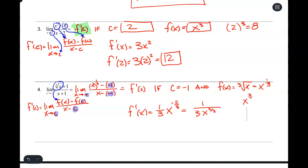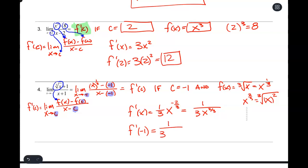Let me rewrite that — I don't like negative exponents. So f prime of x equals 1 over (3 times x^(2/3)). Remember, x to the 2/3 means we square x then take the cube root. Now f prime of negative 1: we get 1 divided by [3 times (negative 1)^(2/3)]. Squaring negative 1 gives positive 1, taking the cube root of 1 gives 1. So this equals 1/3. Boom — that's the answer.